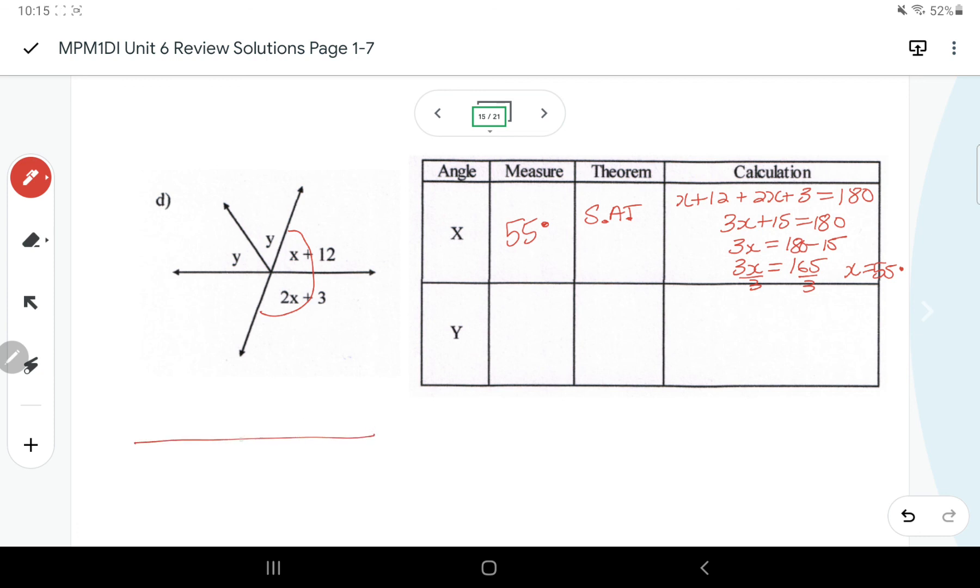So then if we looked at this piece here, this is X plus 12, which would then be 67 degrees. And then we have a Y and a Y, so we know that those three are supplementary. So I'd say Y plus Y plus 67 equals 180, so 2Y plus 67 equals 180. So that's 180 minus 67. So then we take that 113, divide by 2, and you should get 56.5 degrees for the Y. Okay, so double checking your work on those.